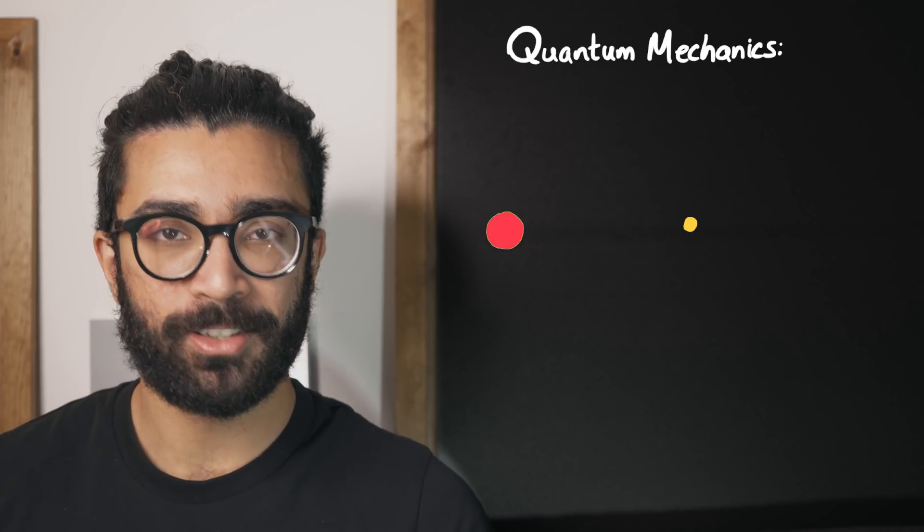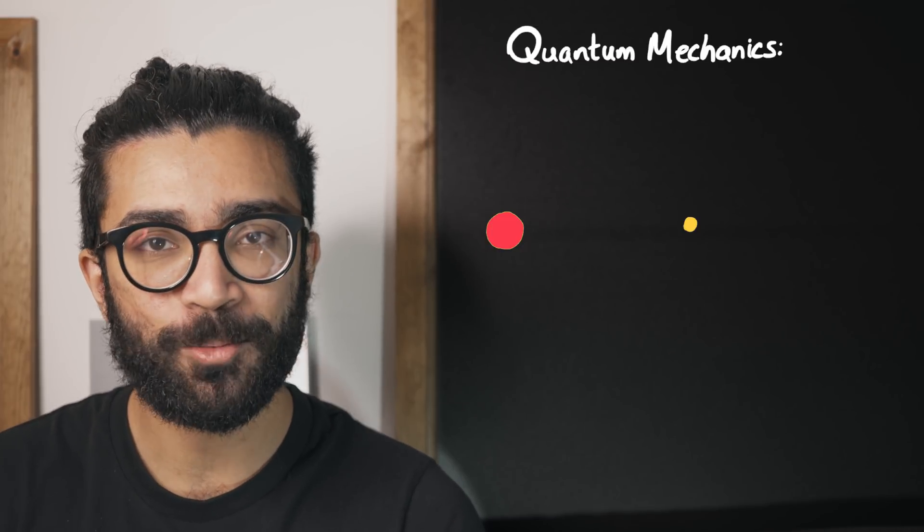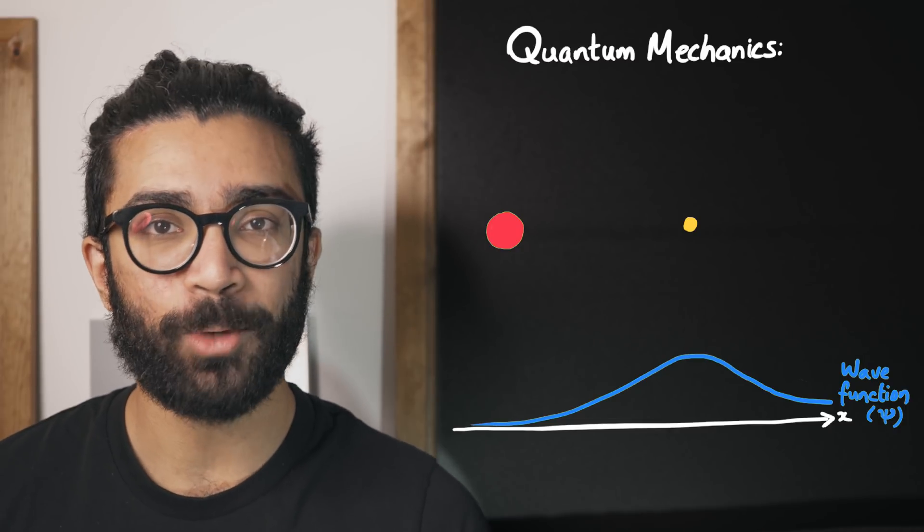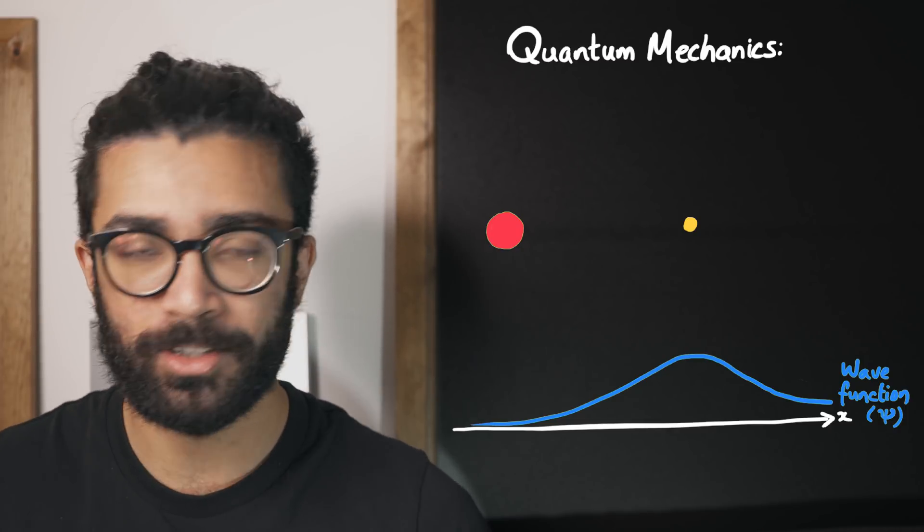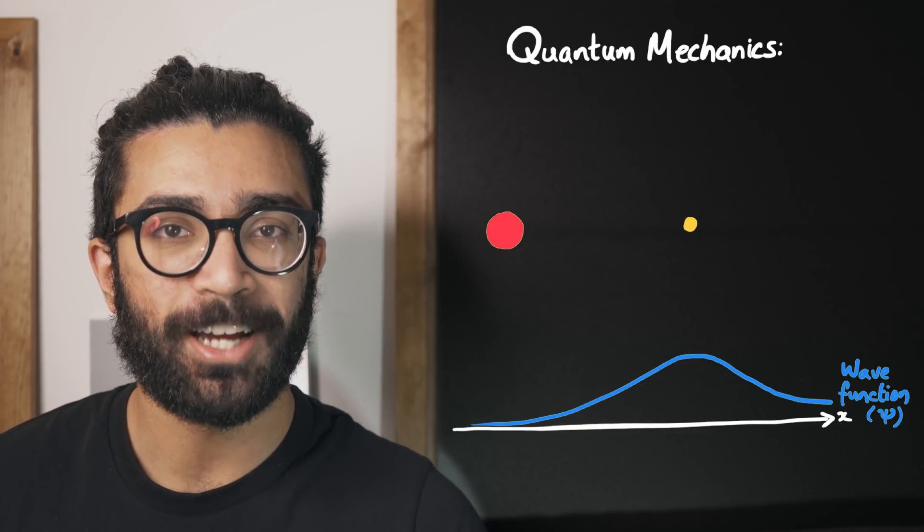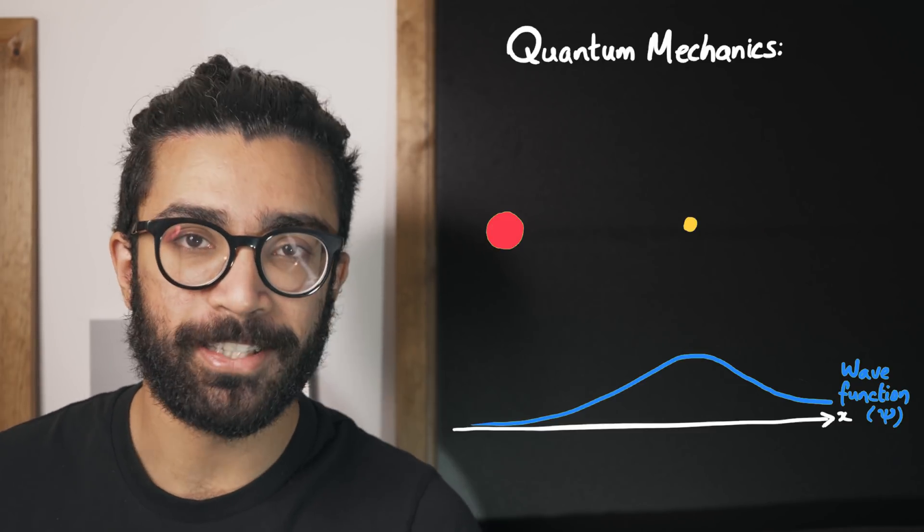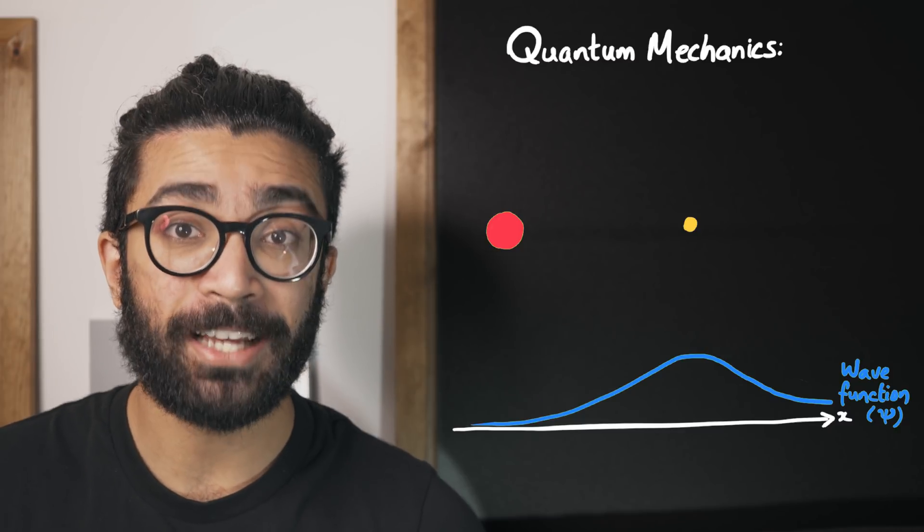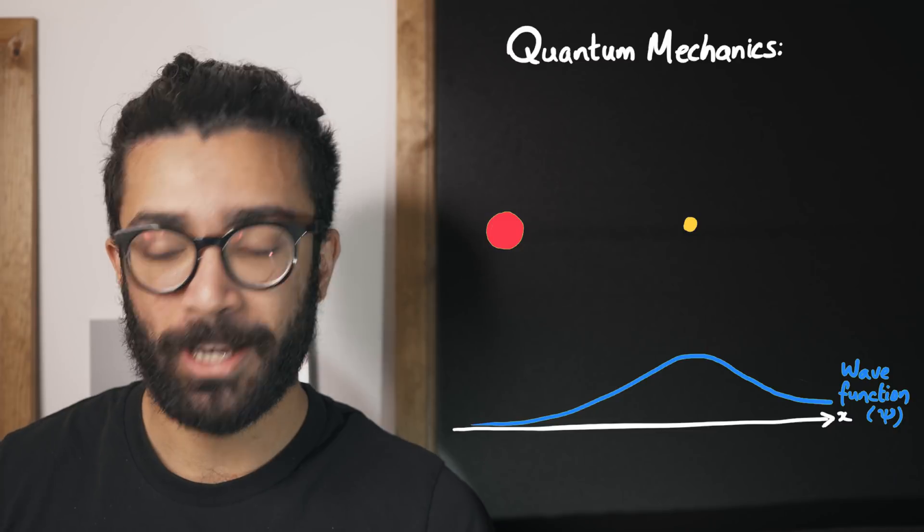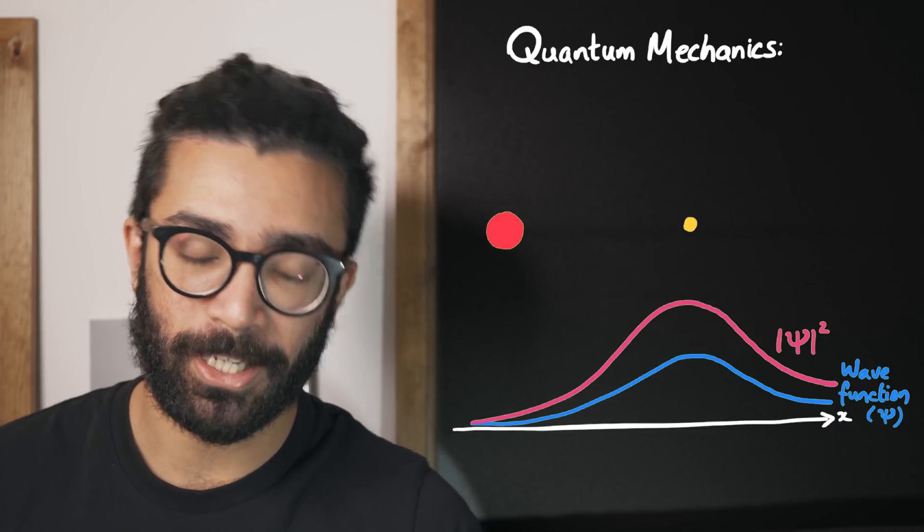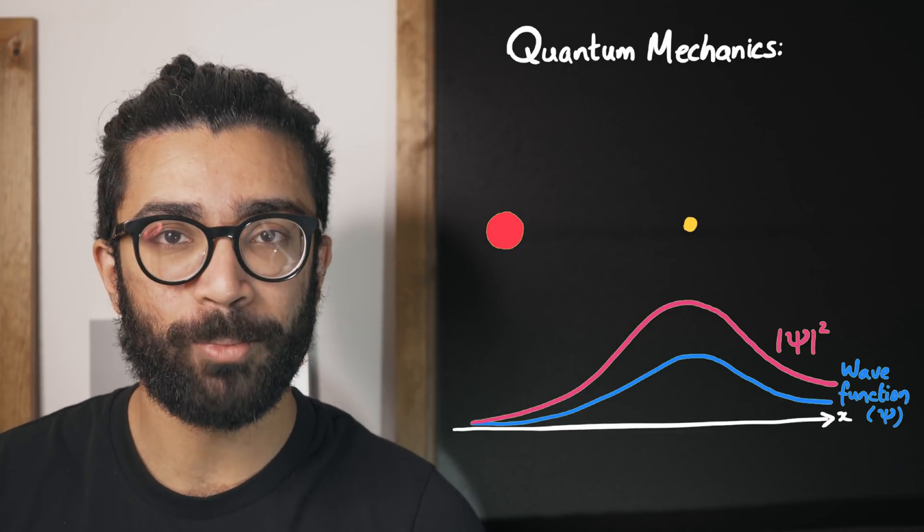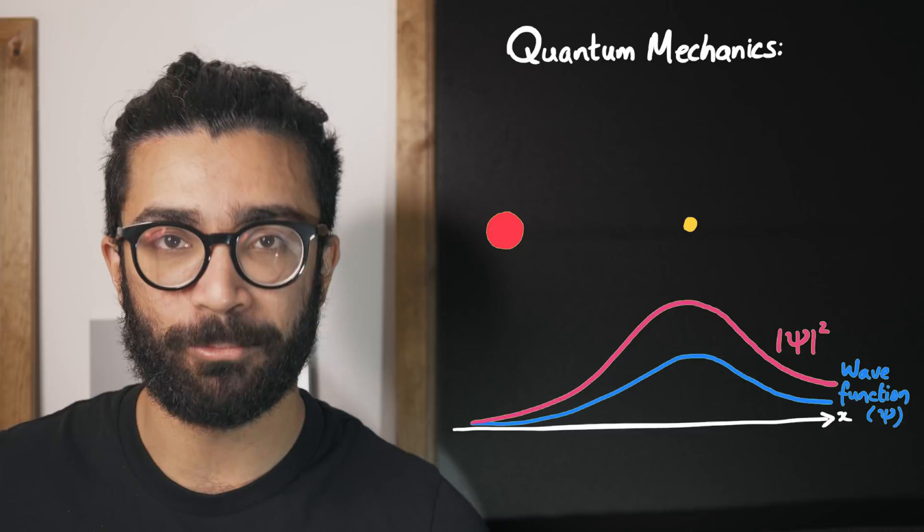Now quantum mechanics, the study of stuff on a small scale, gives us what is known as a wave function that describes how likely we are to find the electron certain distances away from the proton. In other words, the wave function is directly linked to the probability of us finding the electron at different points in space. Specifically, if we take our wave function as calculated from quantum mechanics and we square it—technically take its square modulus—then this gives us something about the probability of finding the electron at different points.